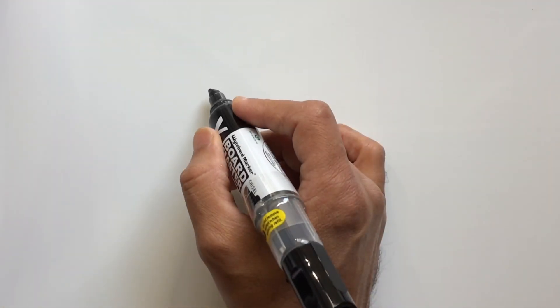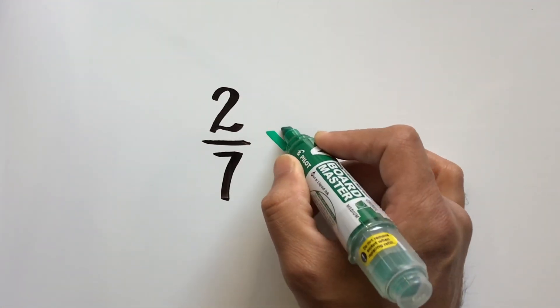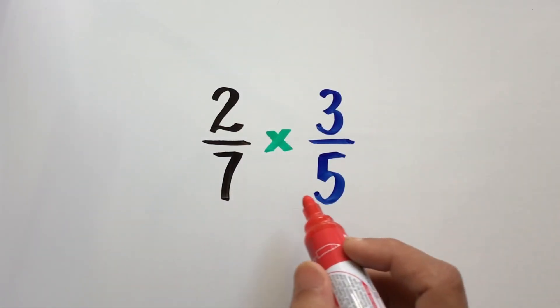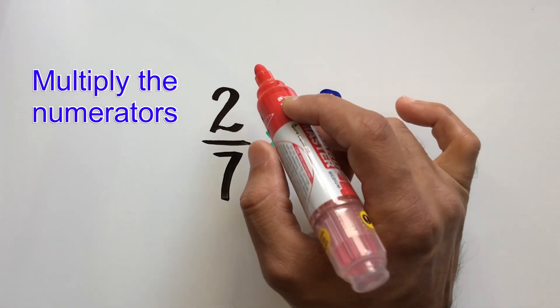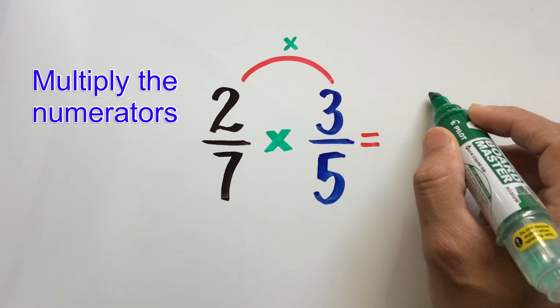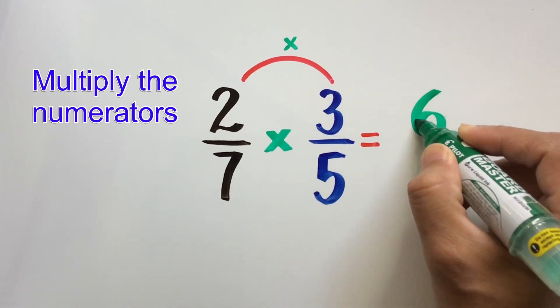Let us say we need to multiply two fractions, 2 over 7 and 3 over 5. In order to multiply these two fractions, we first multiply the top numbers or the numerators. And when we do that, we get a new numerator, in this case 6.